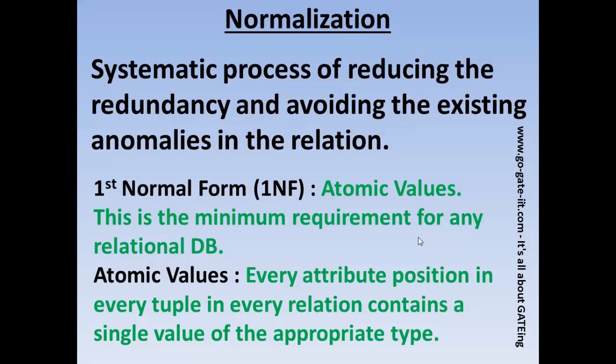What first normal form says is every relation should contain atomic values. Every attribute position in every tuple in every relation contains a single value of the appropriate type. For example, if we define an ID for a relation, ID can always be unique. Suppose we define the data type of ID as integer — we cannot decompose an integer further, so it contains an atomic value.